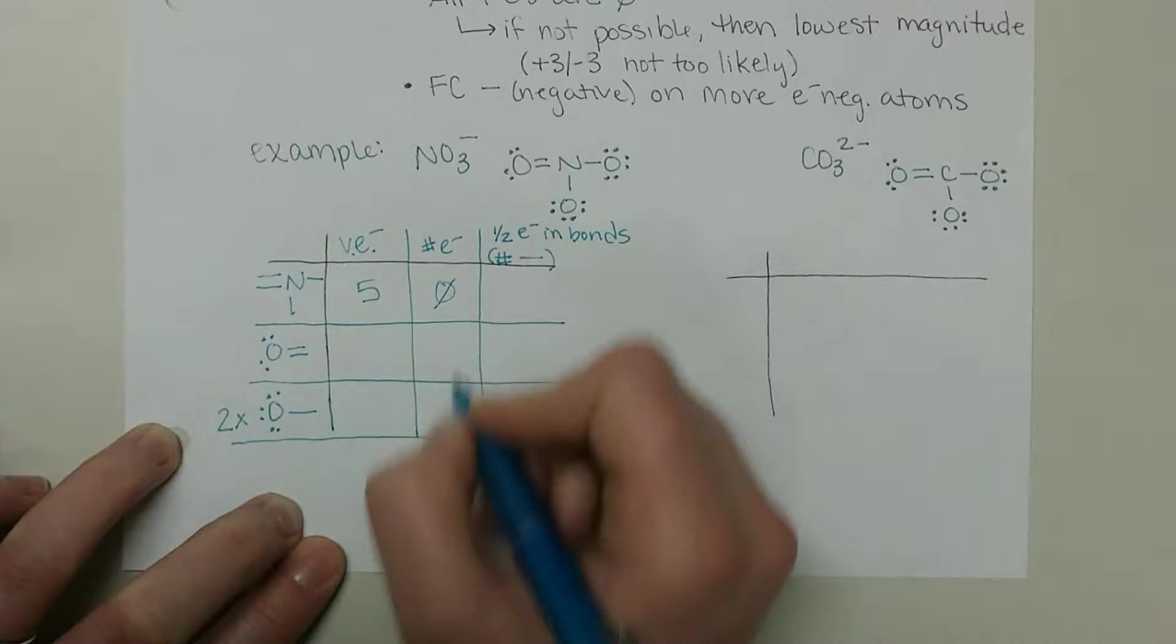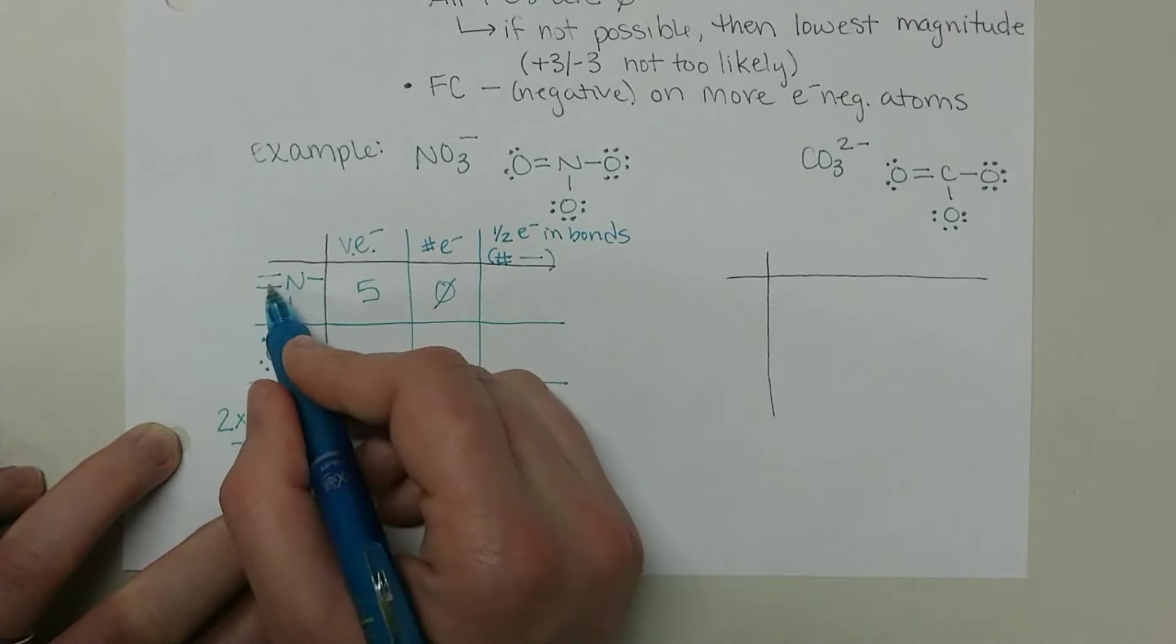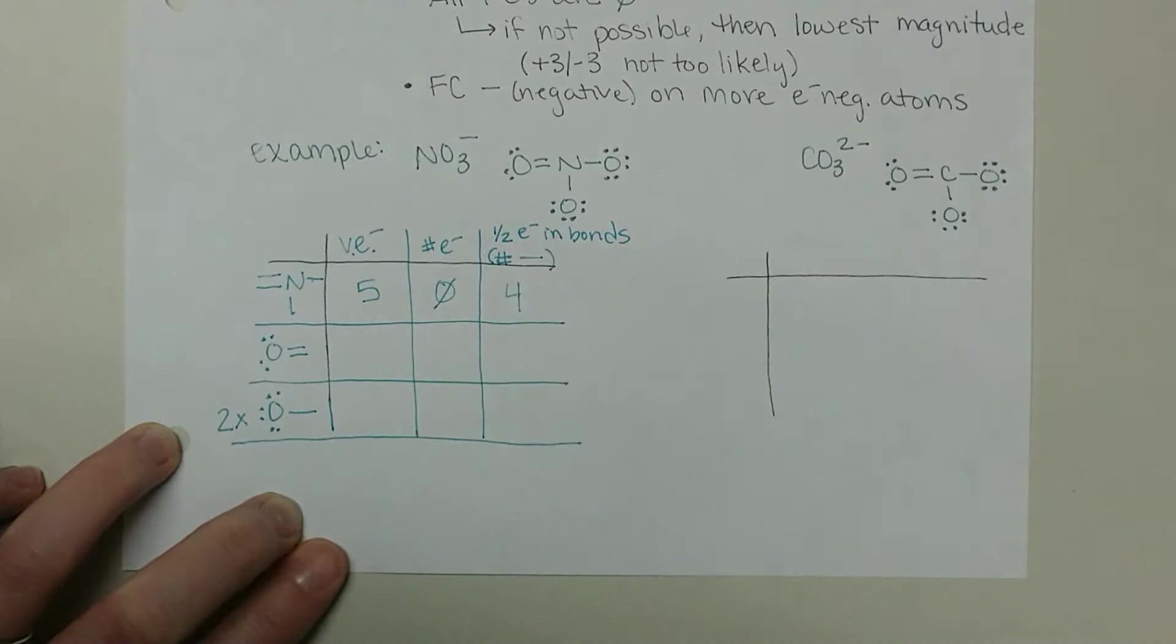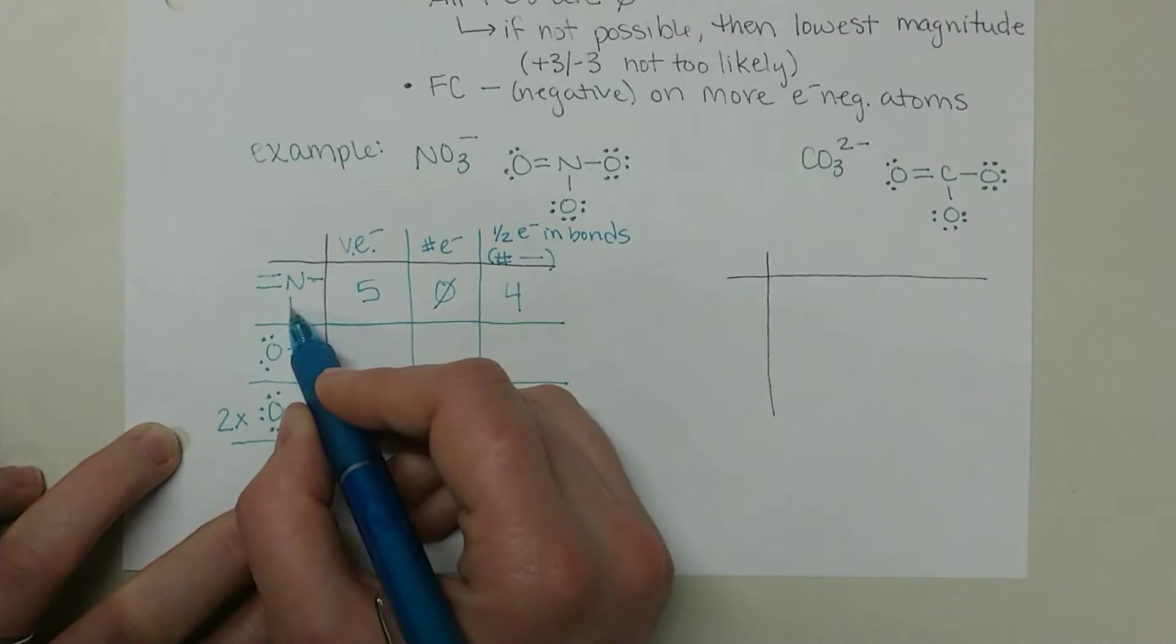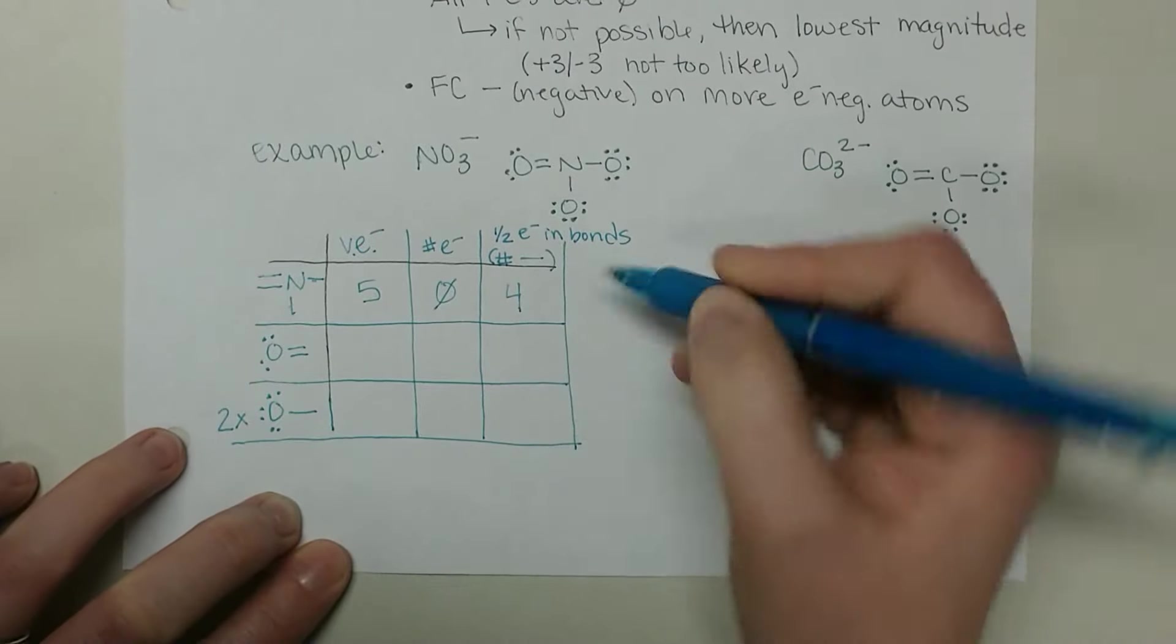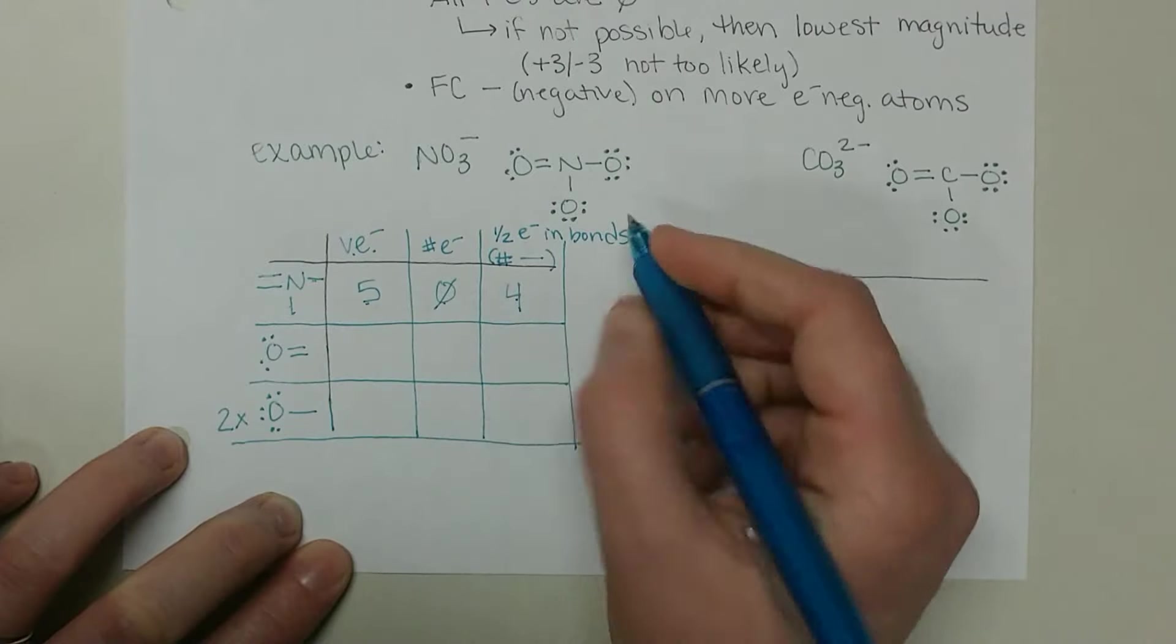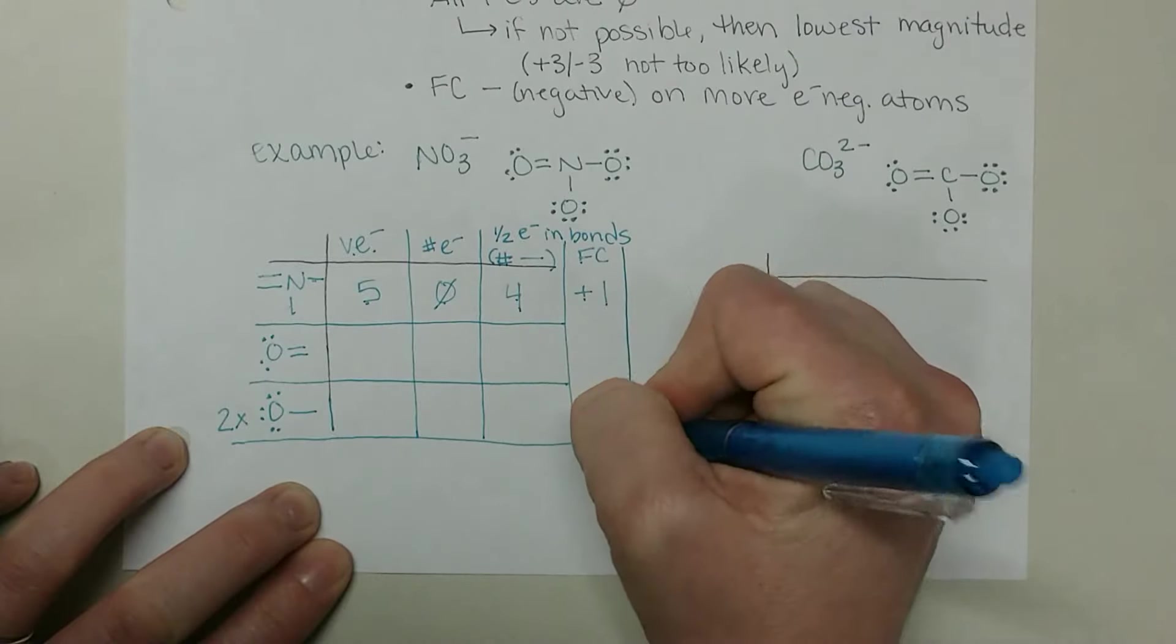Nitrogen has five valence electrons. There are no dots, no lone pairs of electrons on the nitrogen. And there are four lines on that nitrogen. So we have eight total electrons around the nitrogen, and we want half of those, so four. Then our final column here, we take our five minus zero minus four, and we have a plus one. This column will be our formal charge.